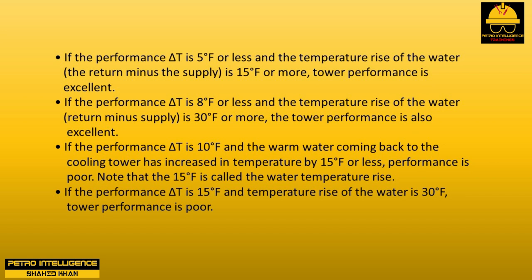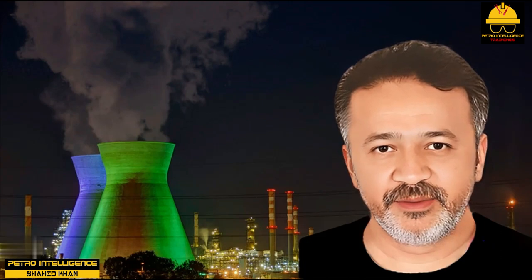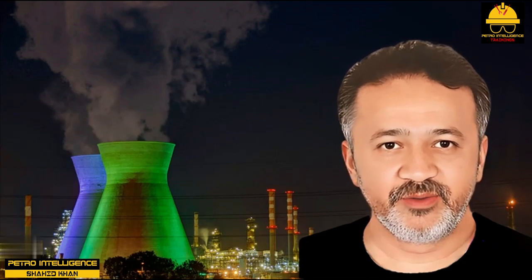Note that the 15°F is called the water temperature rise. If the performance delta T is 15°F and the temperature rise of the water is 30°F, tower performance is poor. In older induced draft wooden cooling towers, a common problem is that the wooden slates have broken up — there is usually an access inspection door at the base of the cell. Often the water distribution holes are plugged or there are large holes broken into the deck. Water is not supposed to overflow around the outside of the cooling tower. On some cooling towers, the fans are driven by belts which can slip, or the fan blade pitch is set too low — less than 15 degrees; the maximum is 23 degrees.